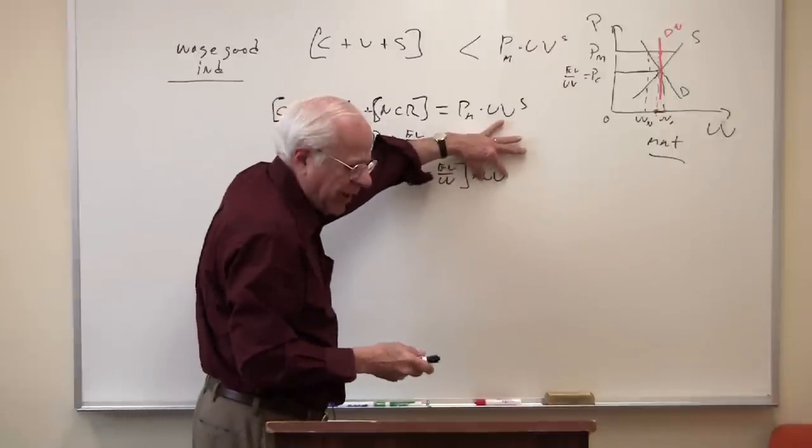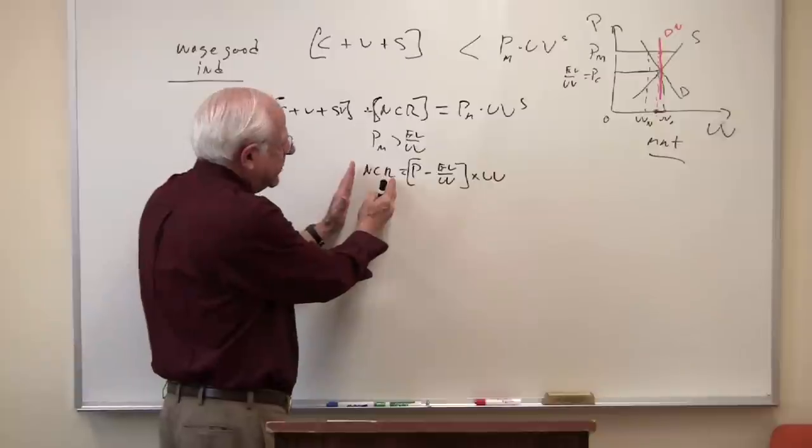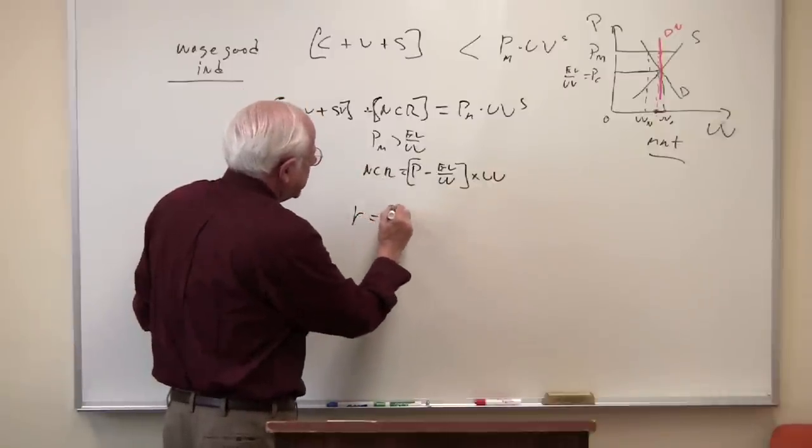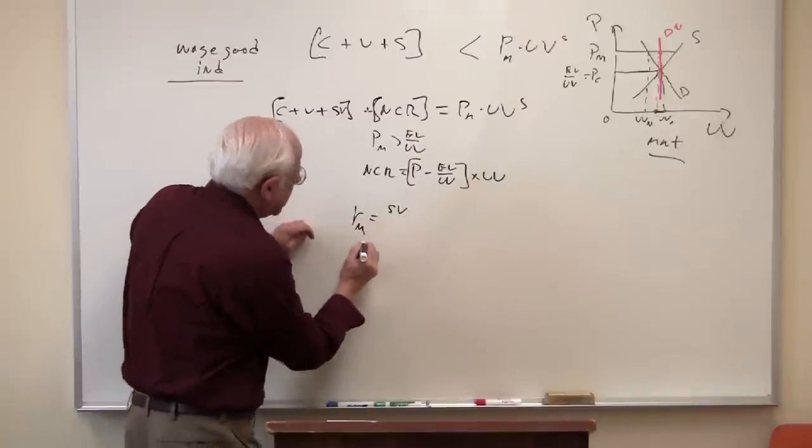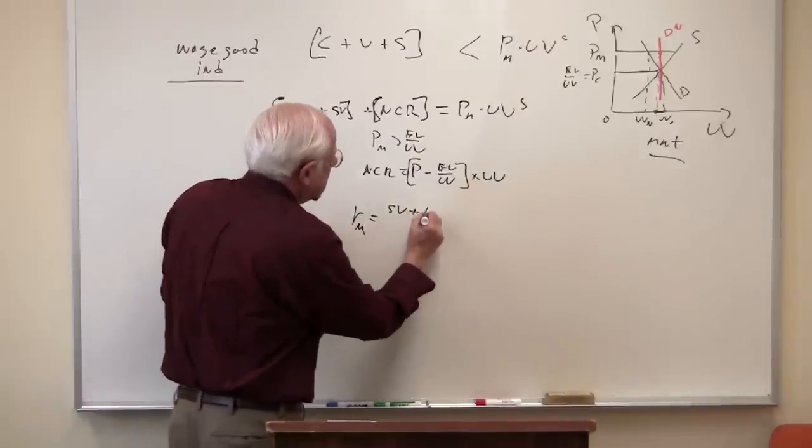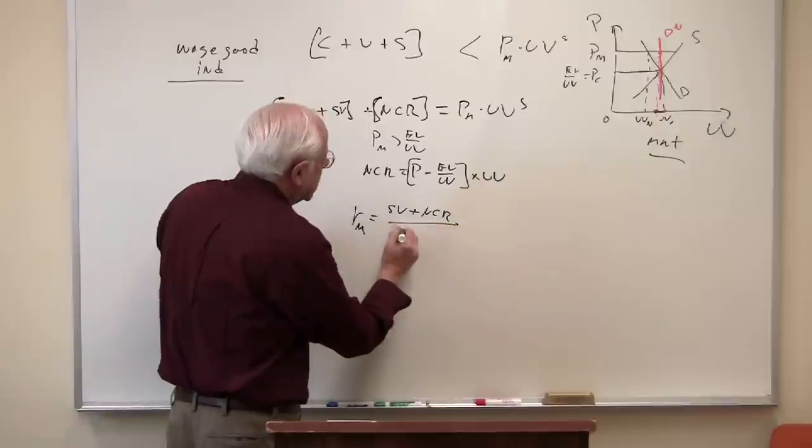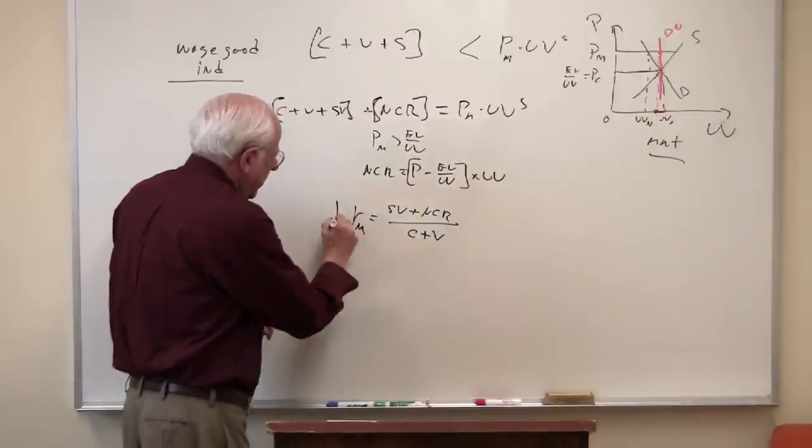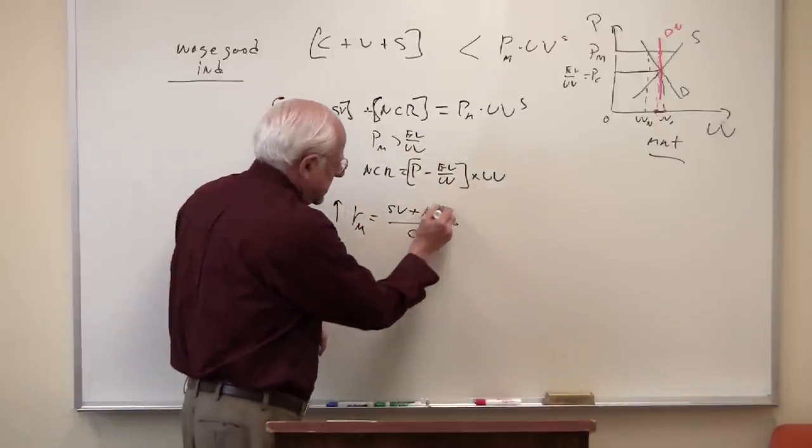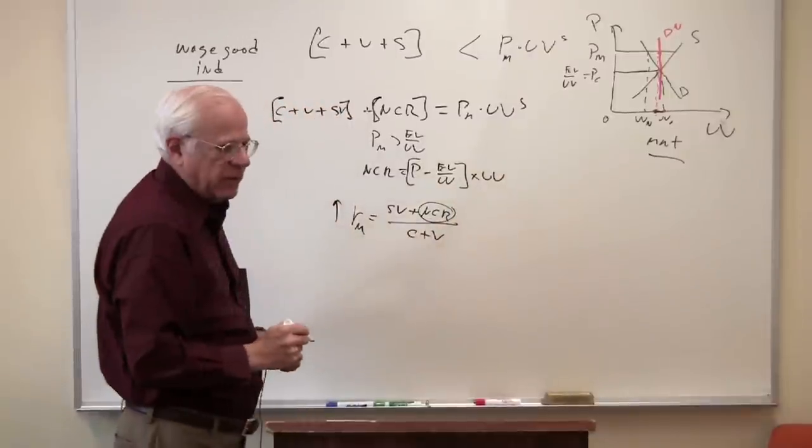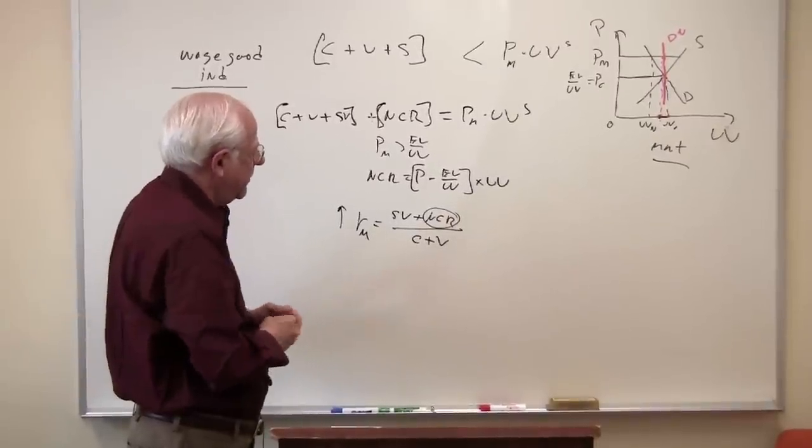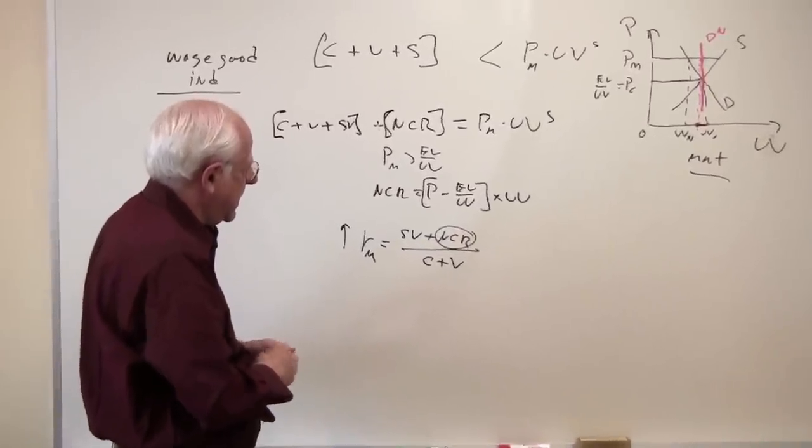So this NCR has nothing to do with class exploitation. Don't confuse the two now at the end of the course. This is class exploitation. This is unequal exchange. This is the use of power to set a price greater than the unit value times the goods sold. And if this is still large, the NCR can loom very large. In this case, then, the rate of profit for the firm is the surplus. So let me call this the monopoly rate of profit is the surplus plus this non-class revenue divided by C plus V. And this can go up quite a bit if this is relatively important.